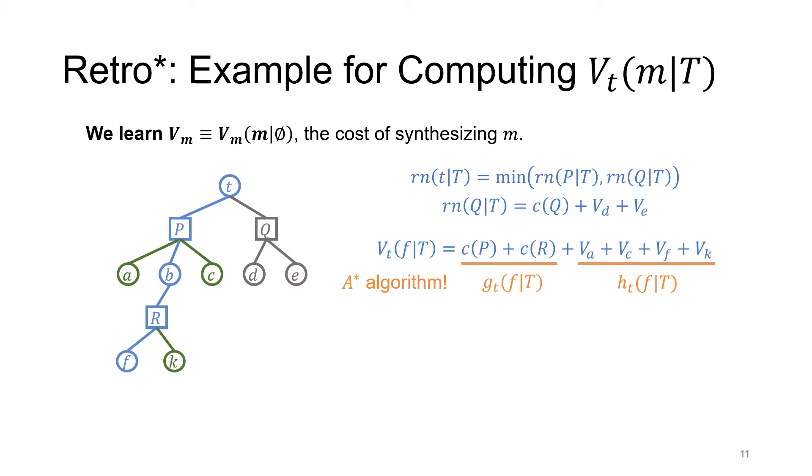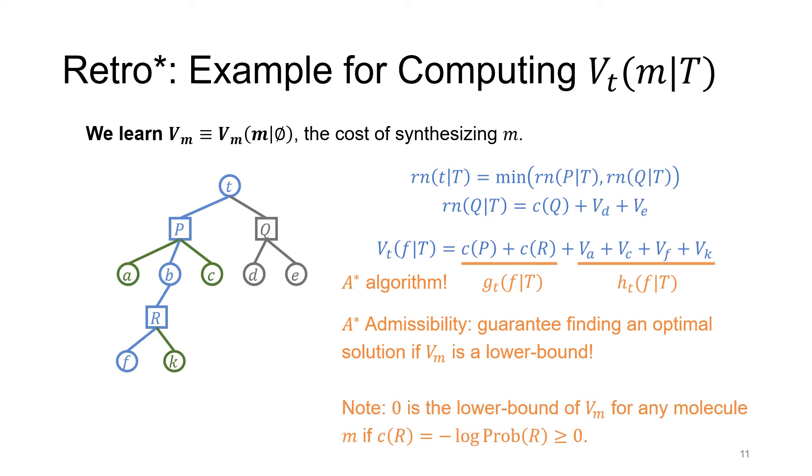Therefore, it also enjoys the admissibility property of A-star algorithm, which means that this algorithm guarantees finding an optimal solution if Vm is a lower bound. Note that 0 would be a lower bound of Vm for any molecule m if the cost of a reaction is defined to be the negative log probability of this reaction, which is used later in our experiment.